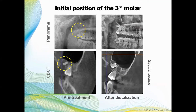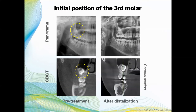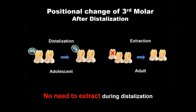In this case, after distalization, the third molar is still positioned mesially in the sagittal section. In another case, in the panoramic radiograph, the third molar is located in the buccal-lingual position but is not clear. In CBCT, however, the third molar is in a more favorable position. So, when using MCPP in adolescent patients, you don't need to worry about third molars. Extraction of the third molar could be considered when patients are grown.